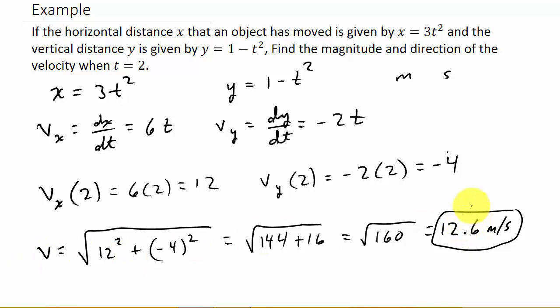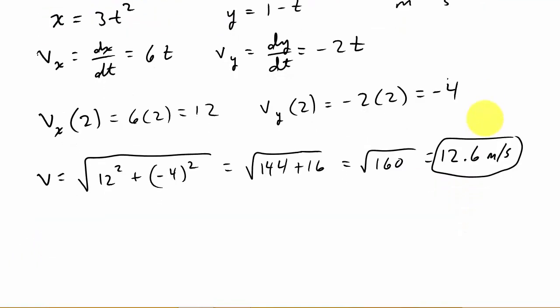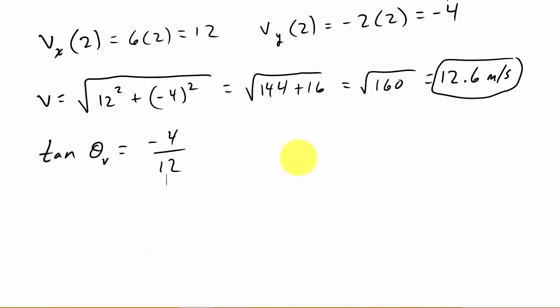Now let's calculate the direction. Okay. So the direction, that is the tangent of theta sub v is equal to v sub y, which is negative 4, over v sub x, which is 12. So that gives us tangent theta sub v is equal to negative 1 third.